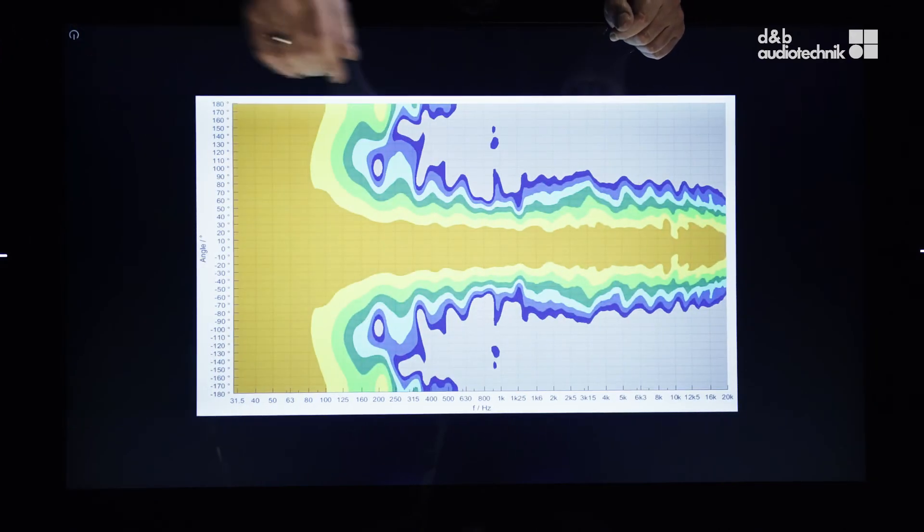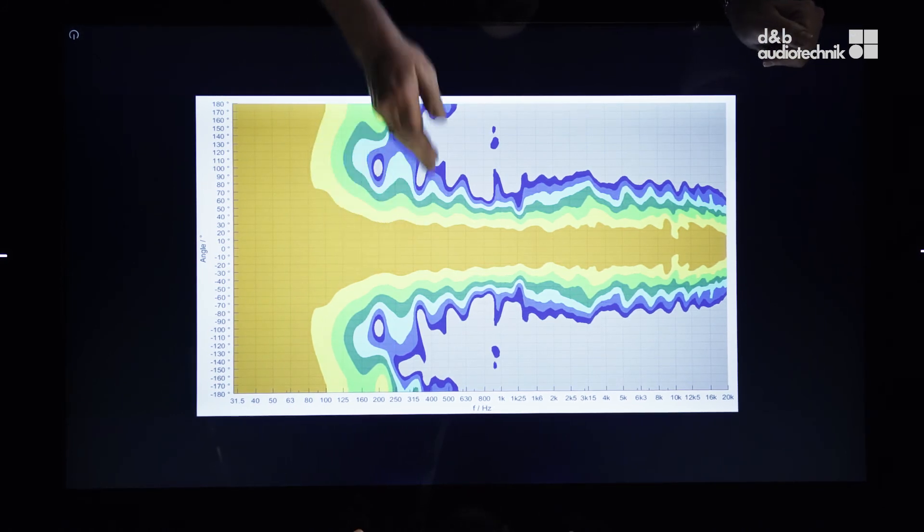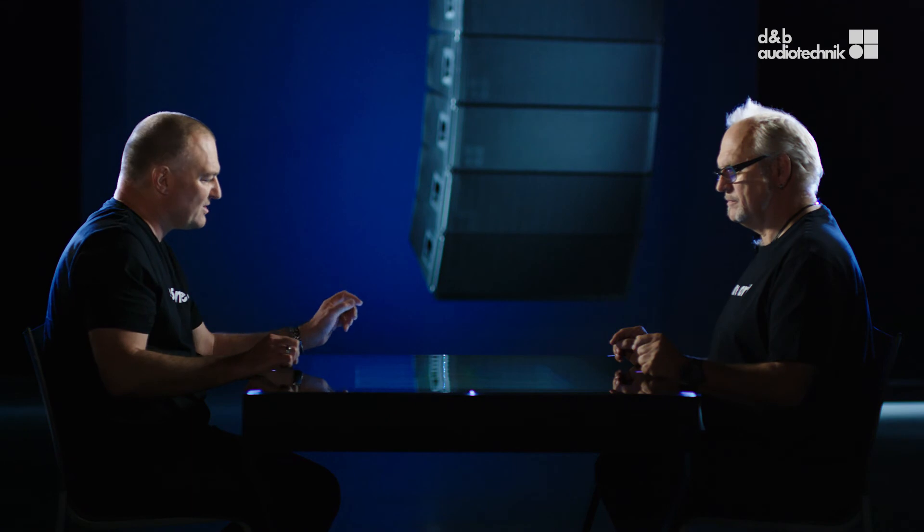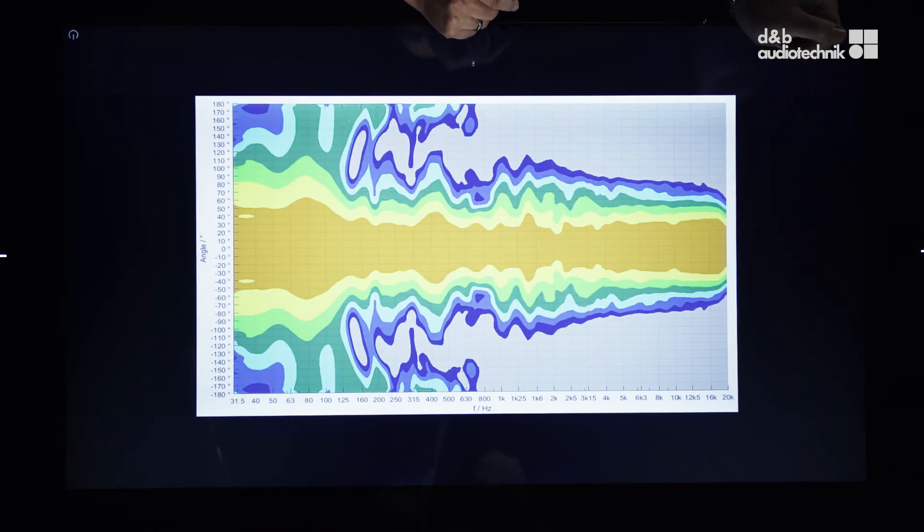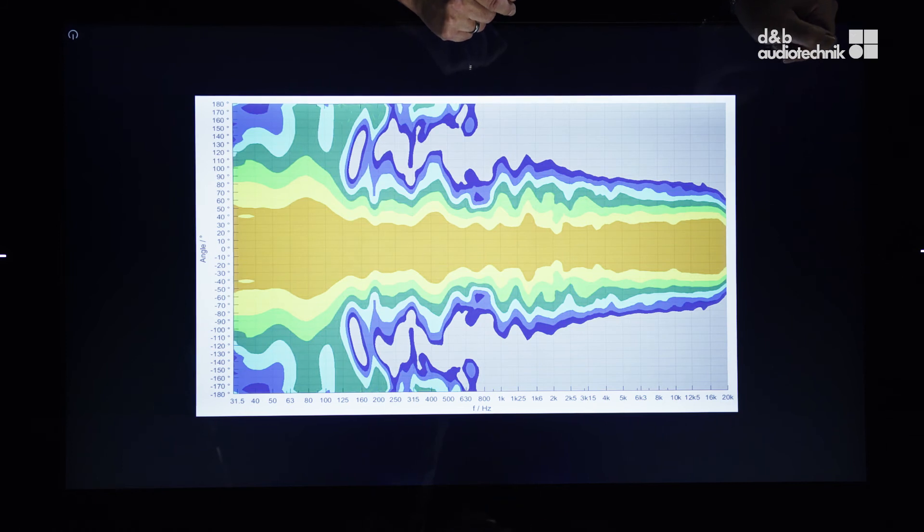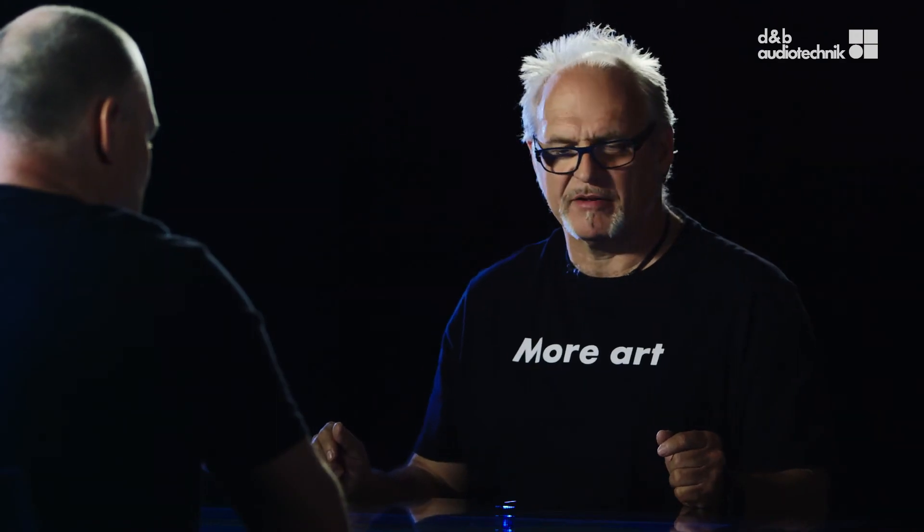Again this is where we're coming from. Below a certain frequency range we are losing our directivity and we are opening up to omnidirectional. Applying this principle to the new system means that we can maintain the directivity towards the lowest frequencies. That's basically what we've been dreaming for decades from a full range cabinet, basically perfect isobars over the entire frequency band.